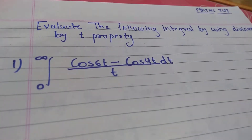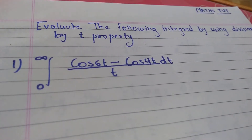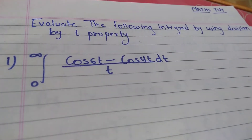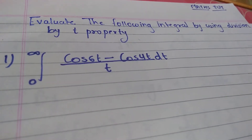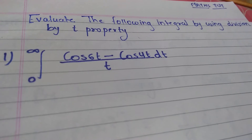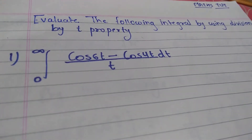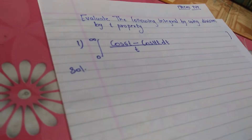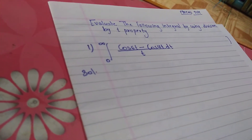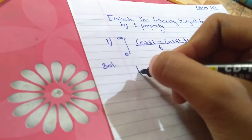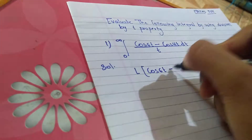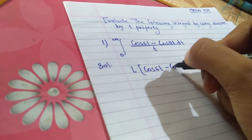Hey guys, welcome to my channel. Today I'm going to discuss the evaluation of the division by t property. Let us start with this question: here we have the Laplace transform of cos(6t) minus cos(4t). First we will find out the Laplace of cos(6t) minus cos(4t).